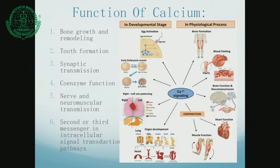What are the basic functions of calcium in the body? There are six functions: one being bone remodeling and growth, second is tooth formation, third calcium acts as an important cation in neuromuscular junction transmission, fourth it acts as an important coenzyme-functioning molecule, fifth it acts as a neuromuscular and nerve-muscle transmitter, and finally it serves as a second and third messenger in intracellular signal transduction pathways.